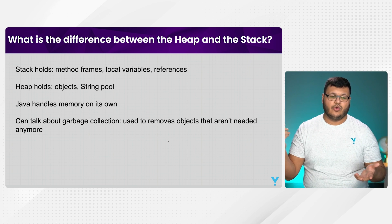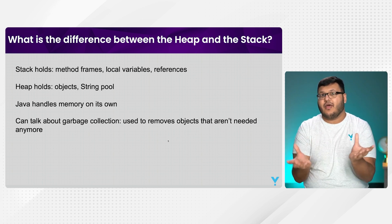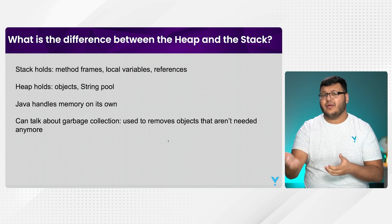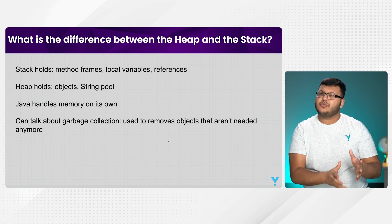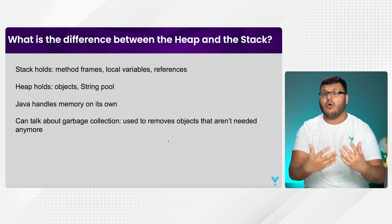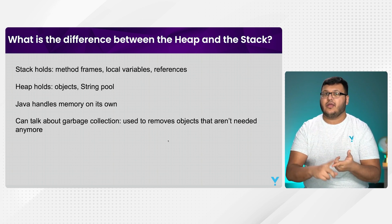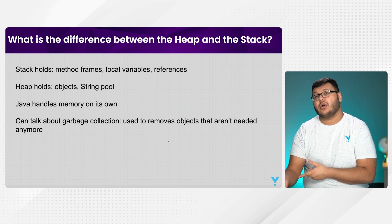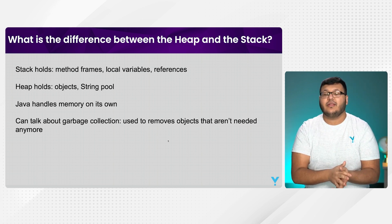The stack is where we can store things like local variables, or whenever we have a method frame where we keep track of those local variables. We keep track of the references to objects, so it's kind of a temporary storage place. The heap is the area where objects can be stored, and references are used to access those objects in the heap.